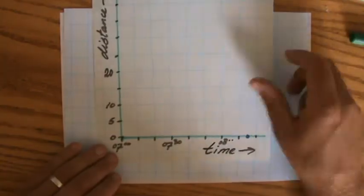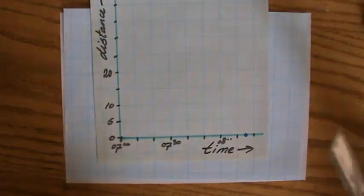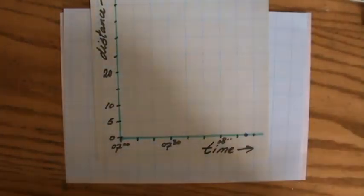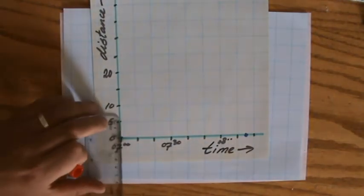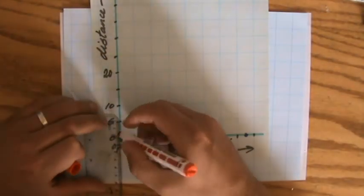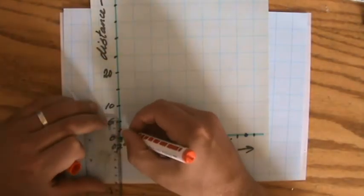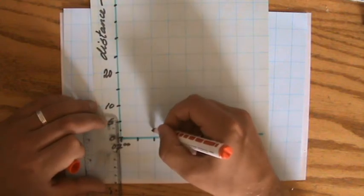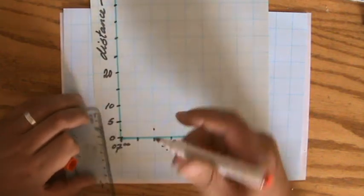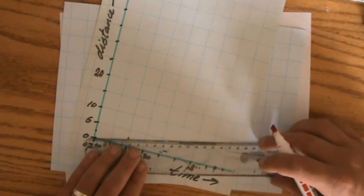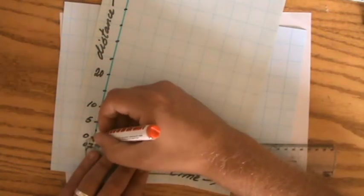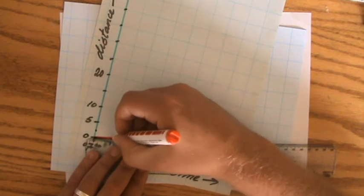It takes her 20 minutes to travel those two kilometers. With one unit equal to five, two kilometers at 20 minutes plots to a specific point. Using a sharp pencil and ruler, draw a straight line from the origin to that point — it's a straight line because her speed is constant.